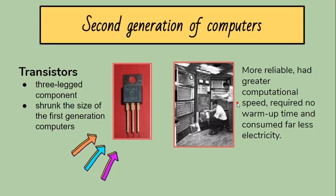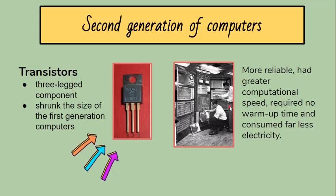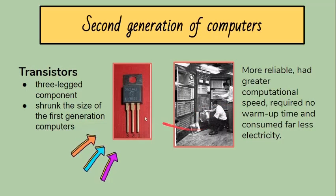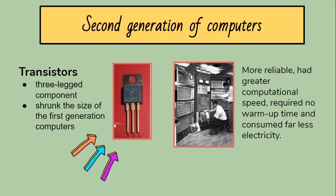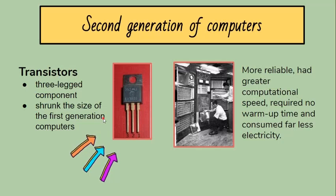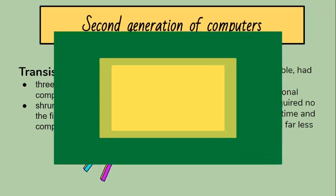Transistors were more reliable, had greater computational speed, required no warm-up time, and consumed far less electricity. Advantages of second generation computers are that the size reduced considerably and they are fast and much more reliable than the first generation. Disadvantages are that they overheated quickly and there were maintenance problems.